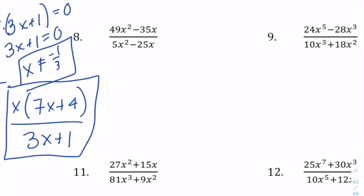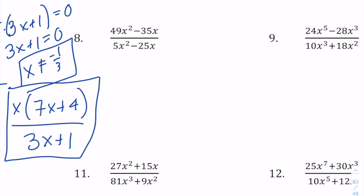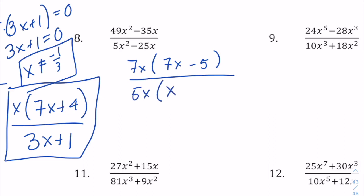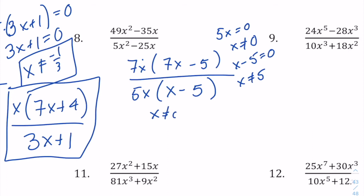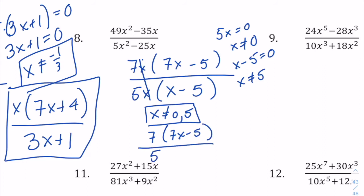In example 8, factoring the numerator gives 7x times (7x minus 5), and factoring the denominator gives 5x times (x minus 5). No coefficients cancel, but an x cancels. Before canceling, the excluded values: 5x equals 0 means x cannot equal 0, and x minus 5 equals 0 means x cannot equal 5. So we have two excluded values: x cannot equal 0 or 5. After canceling the x's, we're left with 7 times (7x minus 5) over 5 times (x minus 5).